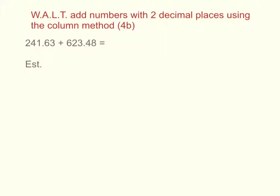In order to add numbers with two decimal places using the column method, we would need to first make an estimate to see if our answer would be sensible. So if we take the calculation 241.63 add 623.48...